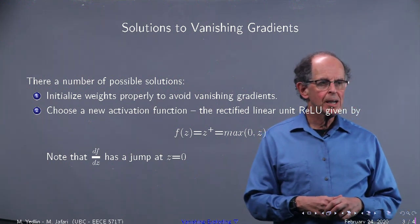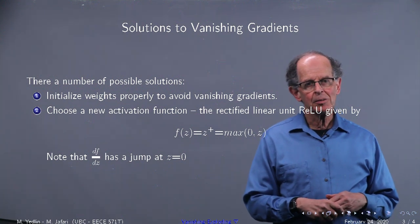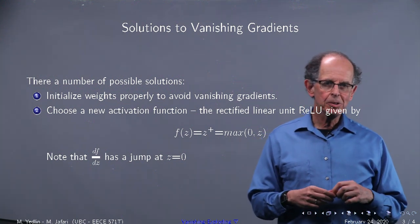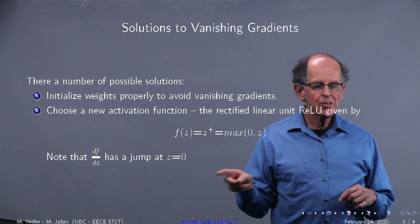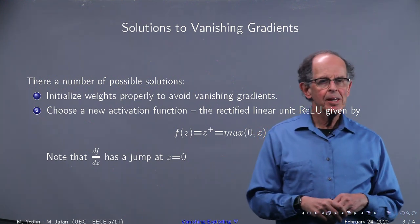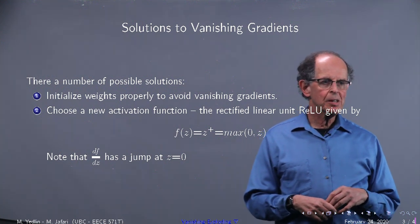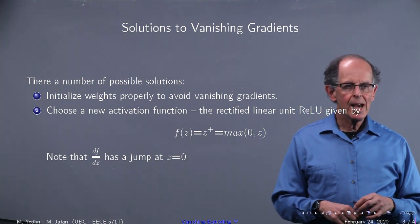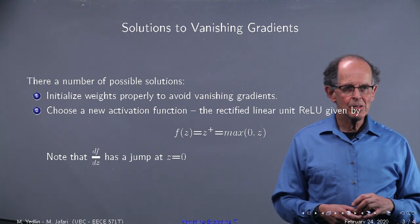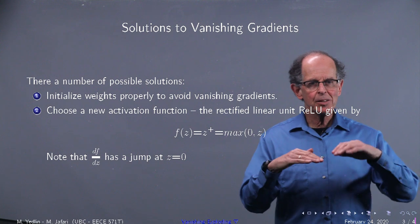Now we're going to choose a new activation function called the rectified linear unit. So when z is equal to zero, it's less than zero, it's zero. And then when z is greater than zero, it's just the function itself. So there it is written. And the problem is that it has a jump at z equals zero.